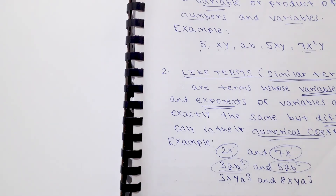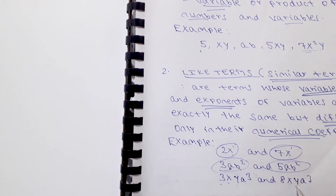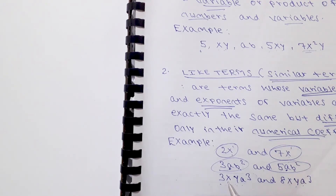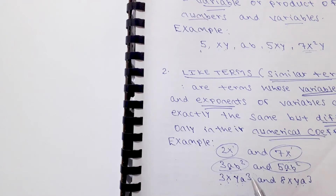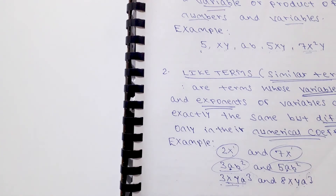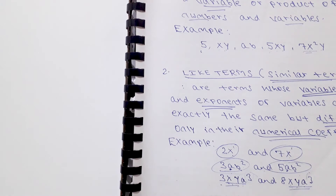For x·y·a cubed and x·y·a cubed: variable x matches x, variable y matches y, and the exponent of a cubed matches — so these are confirmed like terms. The variables and their exponents are the same.